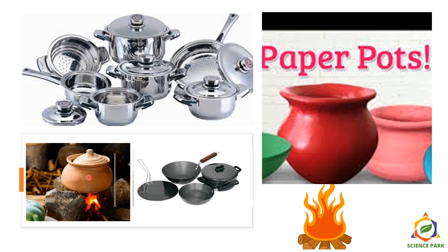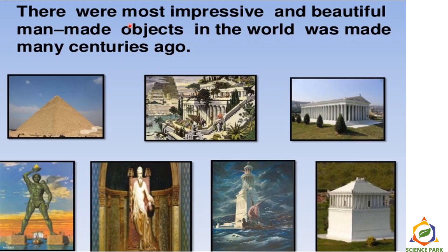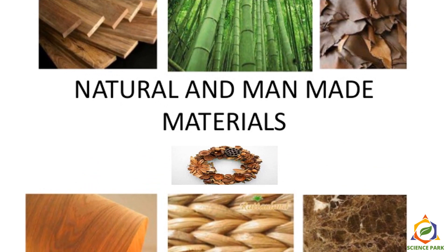People are going back to roots and cooking in earthen pots, which are very healthy. They can conduct heat and are very porous, so all the nutrients can be conserved. Here I am showing you some impressive and beautiful man-made objects in the world, made many centuries ago. Is this possible without studying materials and substances around us? No, it was not possible — showing that we have been studying substances and objects around us for centuries together. So let's start studying natural and man-made materials, their properties, and how they are manufactured.